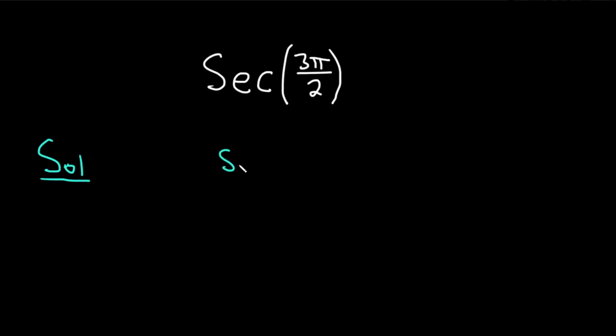So the secant of x is equal to 1 divided by the cosine of x. So for us, x is going to be 3 pi over 2. So this is the secant of 3 pi over 2, and that's equal to 1 divided by the cosine of 3 pi over 2.